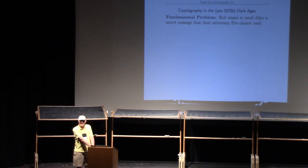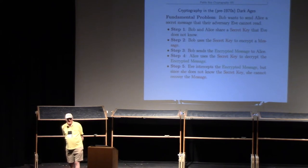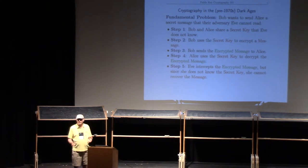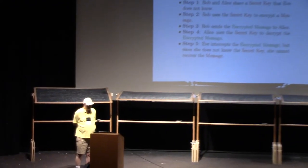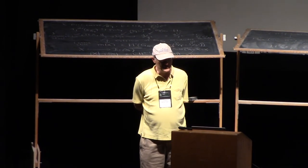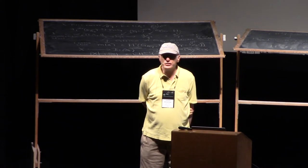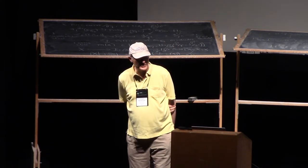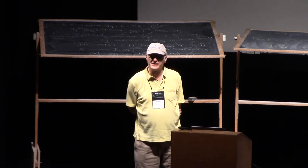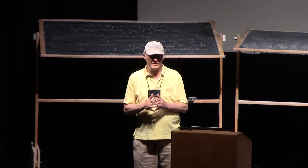This is cryptography in the dark ages, meaning pre-1970s — not that long ago. Here's how stuff was done: first, Bob and Alice would share a secret key — might be a number, or back in the olden days a key phrase or something like that. Bob uses the secret key to encrypt his message and sends that encrypted message to Alice. Now Eve gets to see the encrypted message, but Alice uses the secret key to reverse the encryption process and decrypt it and read the message.